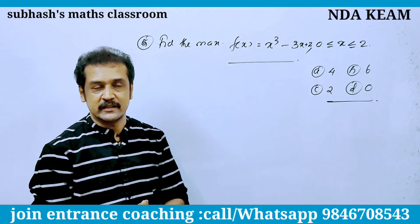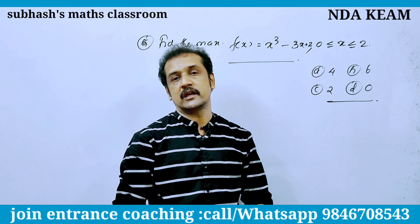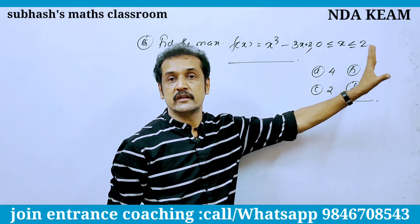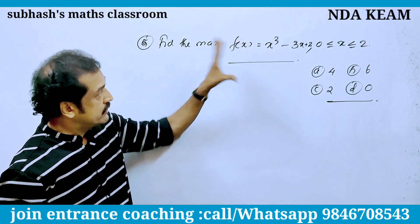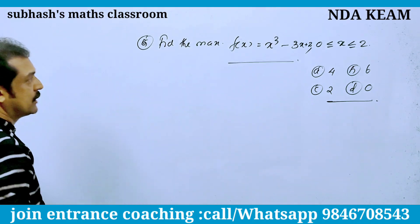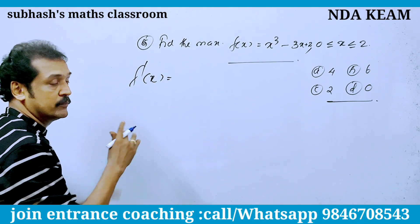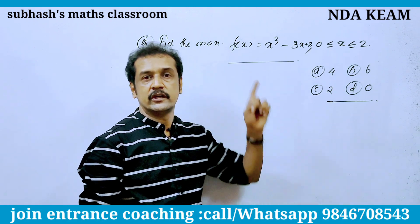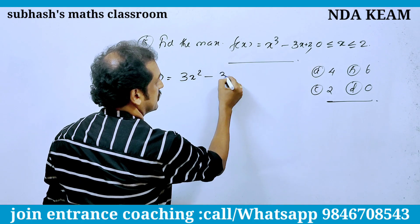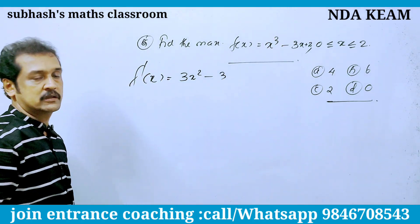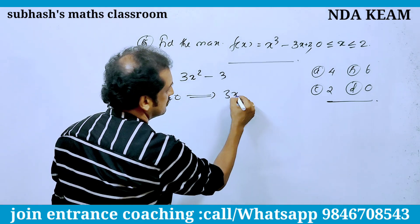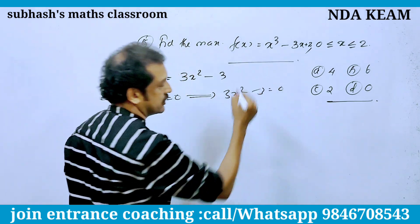Maximum and minimum: find the maximum of f(x) = x³ − 3x + 2 on the interval 0 ≤ x ≤ 2. We need the maximum value. Find f'(x): derivative of x³ is 3x², derivative of 3x is 3. So f'(x) = 3x² − 3. Set f'(x) = 0.